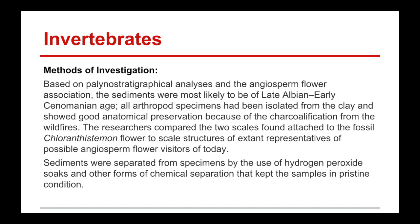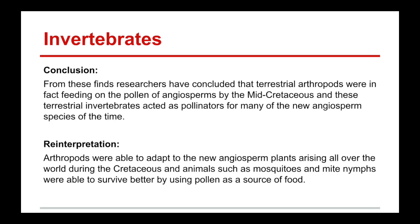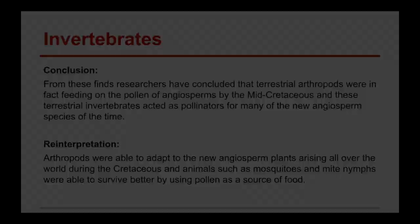The conclusion was that from these finds, researchers were able to conclude that terrestrial arthropods were in fact feeding on the pollen of angiosperms by the mid-Cretaceous period, and these terrestrial invertebrates acted as pollinators for many of the new angiosperm species. Arthropods were able to adapt to the new angiosperm plants arising all over the world, and animals such as mosquitoes and mite nymphs were able to survive better by using pollen as a source of food.